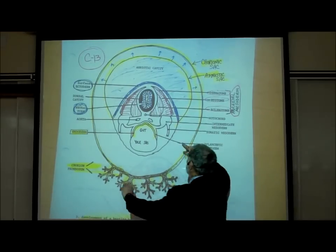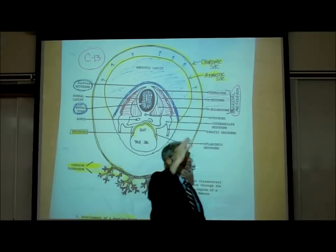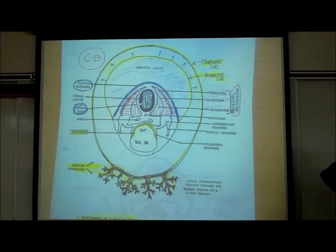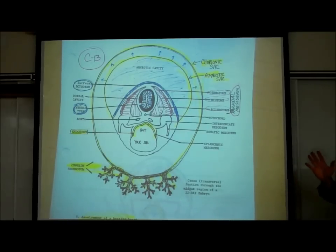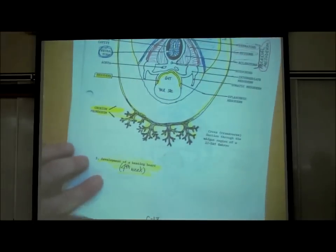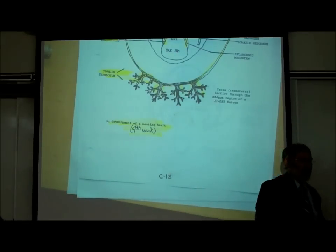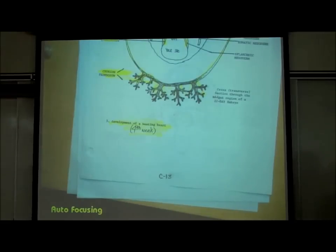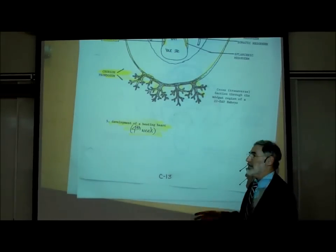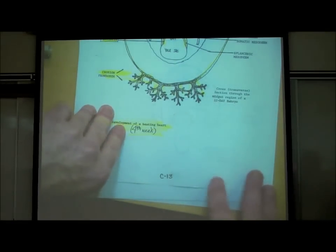The lateral plate mesoderm is already subdivided into somatic mesoderm and splanchnic mesoderm. Also noted at the bottom of C13 is that the heart starts beating during the fourth week — it develops from mesoderm. Just know that it does start beating in the fourth week. The idea is to be impressed by how much is forming during the first few weeks of embryonic development — it's still extremely small, but the nervous system is forming, the brain is forming, and the heart is already beating.